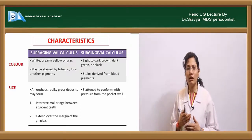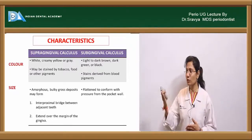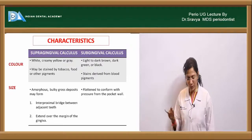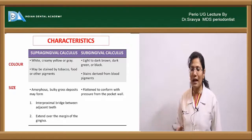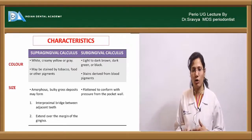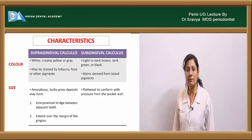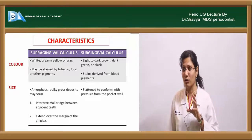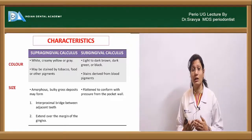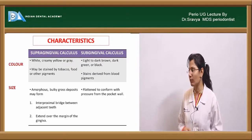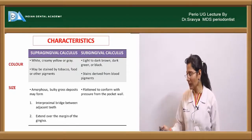Comparing supragingival and subgingival calculus: in terms of color, supragingival calculus is yellowish, white, or creamish-gray, and can be stained by tobacco, food, or other pigments. Subgingival calculus is light to dark brown, mainly because of blood pigments from its source, the GCF.